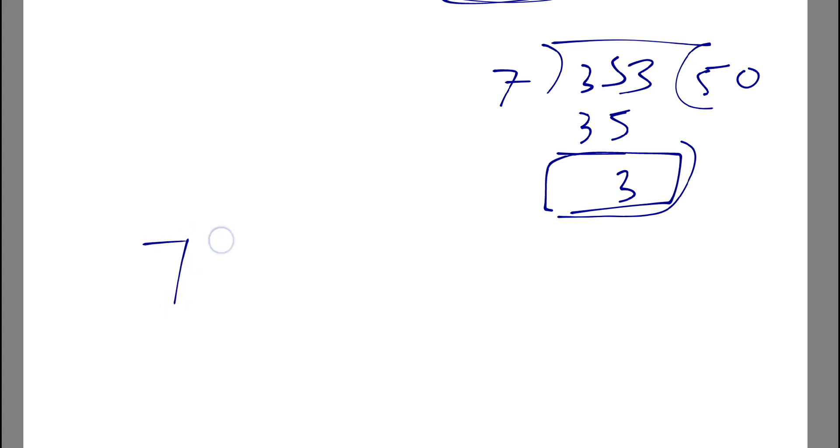The remainder is our answer. So we can see that total number of odd days is 3. Hope you like it. Thanks for watching. Bye-bye.